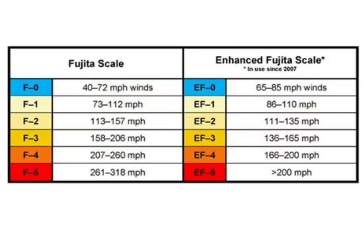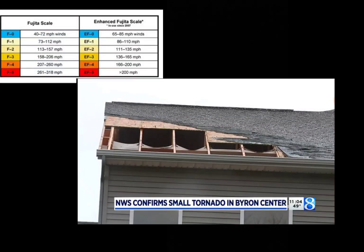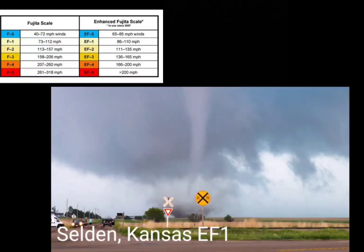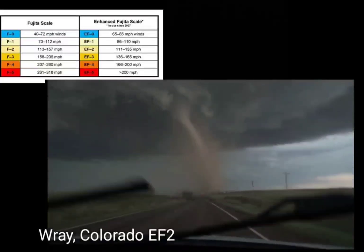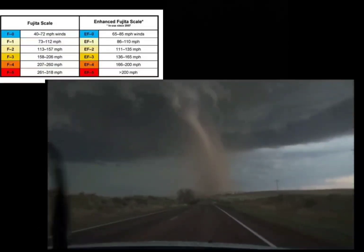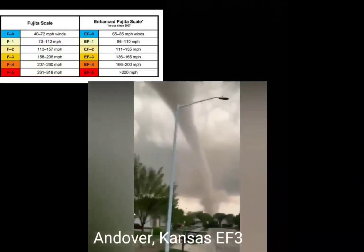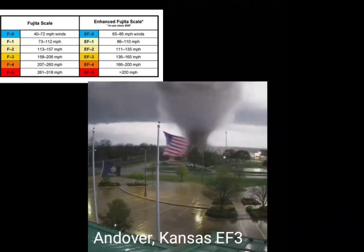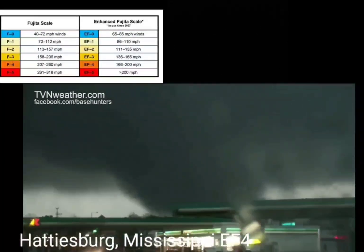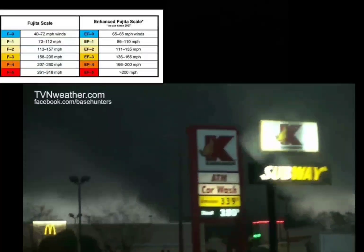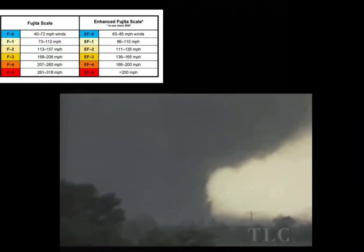The Fujita scale was created by Ted Fujita in 1971, however it has become obsolete due to the Enhanced Fujita scale. There are seven categories. EFU means damage is unknown. An EF0 measures winds at 65 to 85 miles per hour and refers to a tornado causing light damage. An EF1 has winds of 86 to 110 miles per hour with moderate damage. Winds measuring at 111 to 135 miles per hour cause considerable damage and are rated an EF2. EF3 tornadoes are severe with winds at 136 to 165 miles per hour. EF4 is devastating with winds clocking at 166 to 200 miles per hour, and winds reaching over 200 miles per hour with incredible damage are rated an EF5.